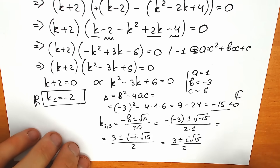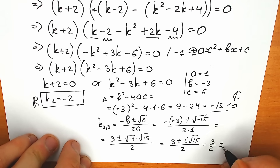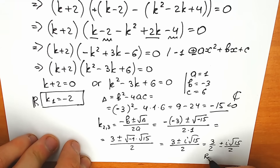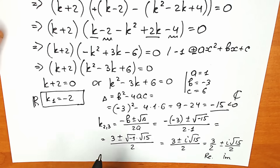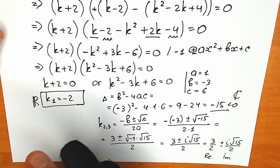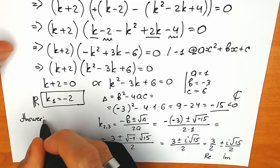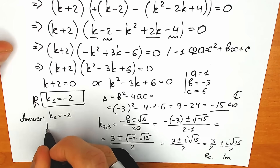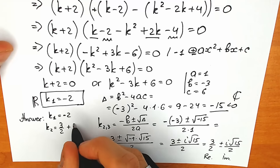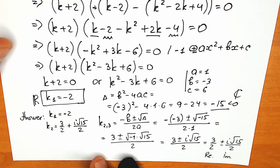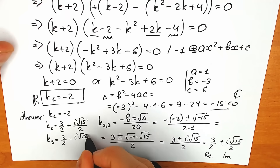A lot of students prefer splitting into real and imaginary parts, so we can write: k₂ equals 3/2 plus i times (square root of 15 over 2), and k₃ equals 3/2 minus i times (square root of 15 over 2). This is our final answer with three roots: k₁ equals minus 2, k₂ and k₃ are the two complex conjugate roots.